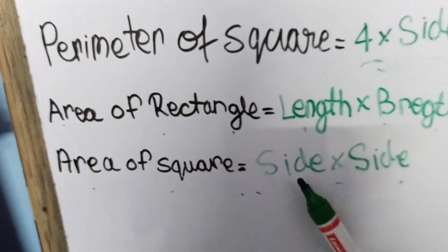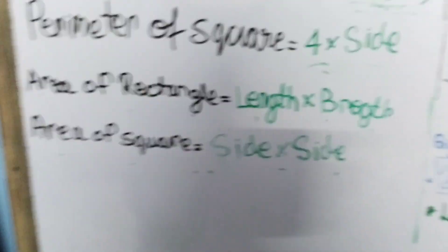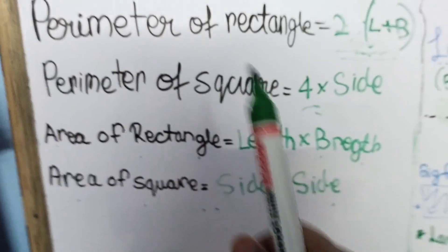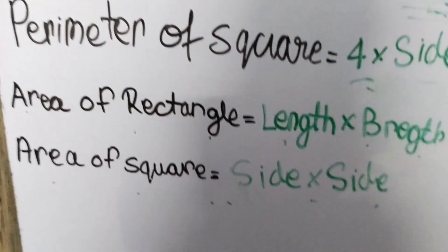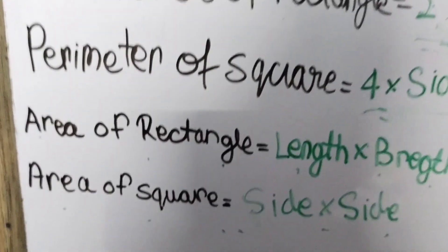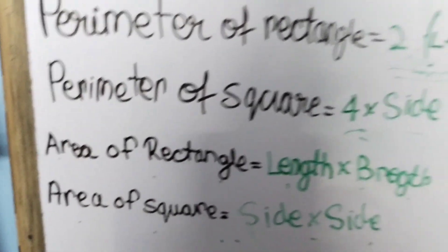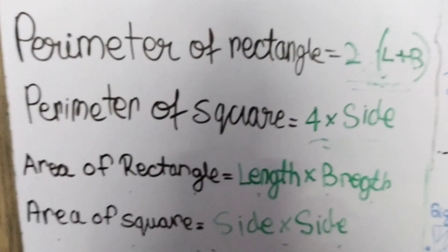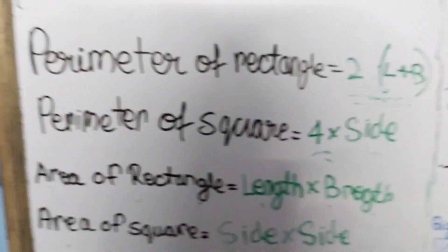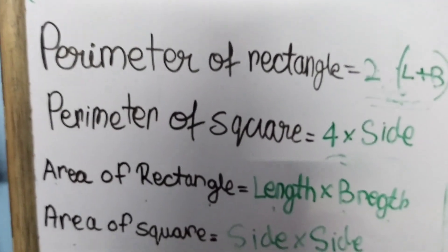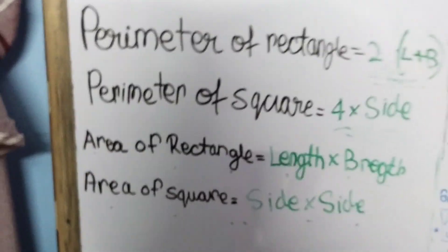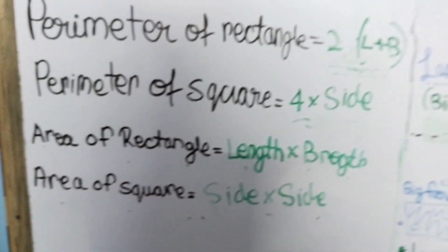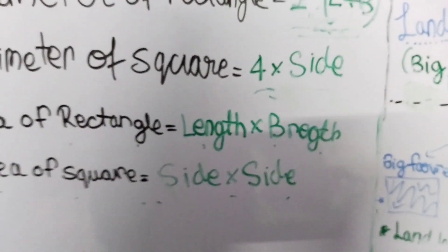The area of rectangle is called length into breadth. Bye guys, if you want more videos please press like. Thank you for watching.